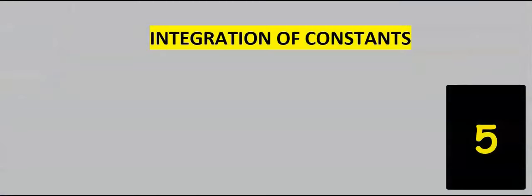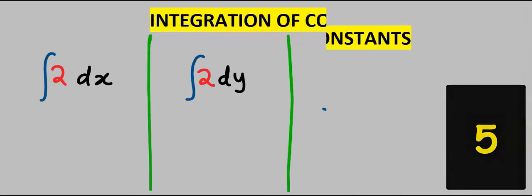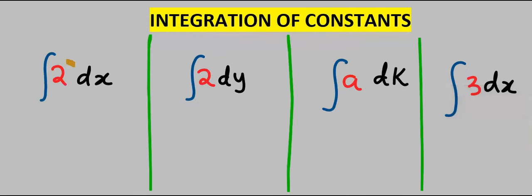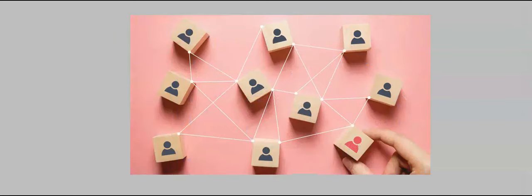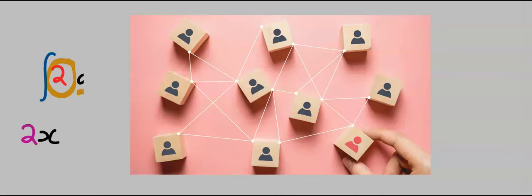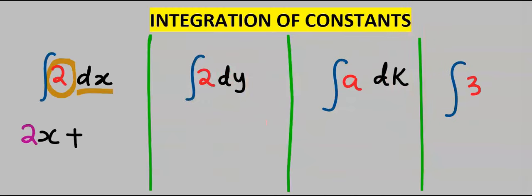Next, integration of constants. Unlike differentiation, when you integrate a constant — here respecting x — your answer will be 2x. However, don't forget the missing link to complete the result, which is plus C.